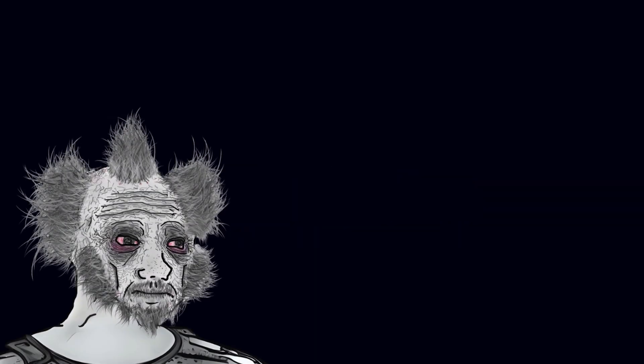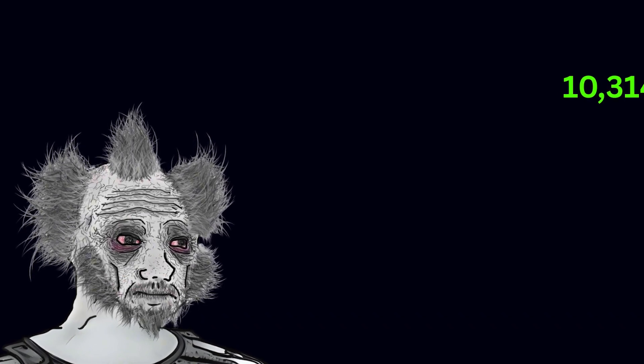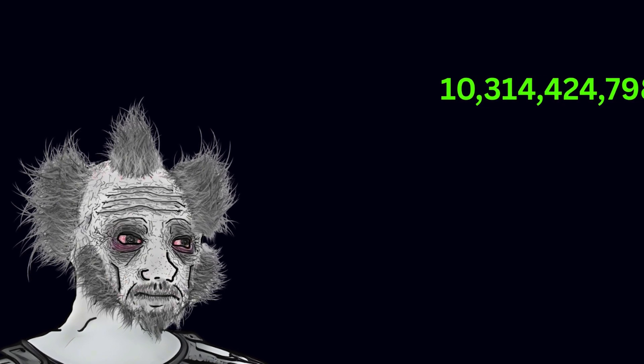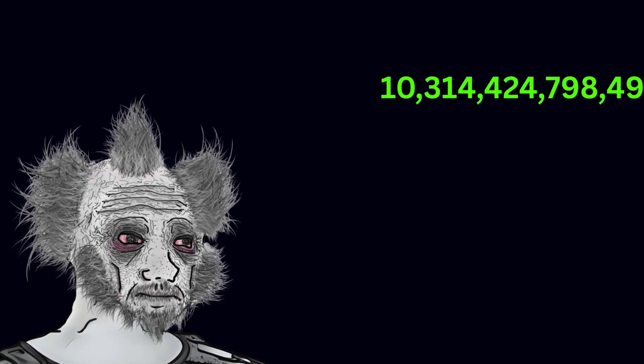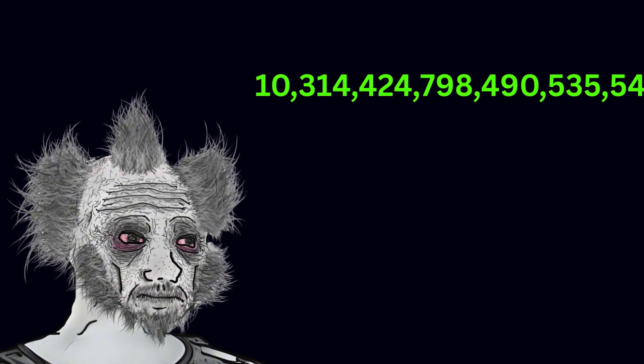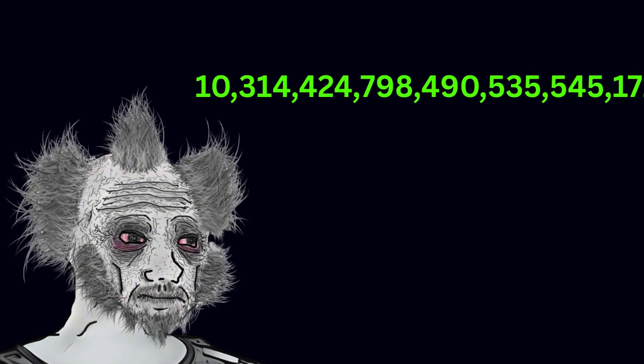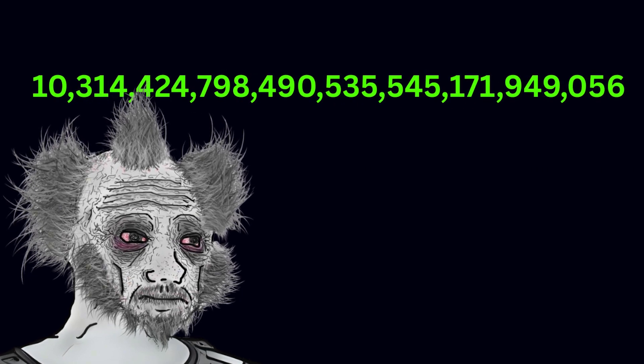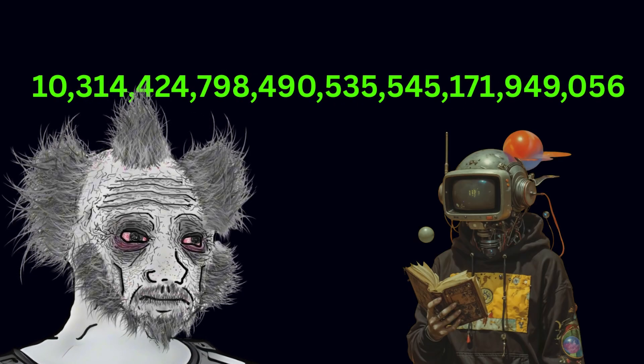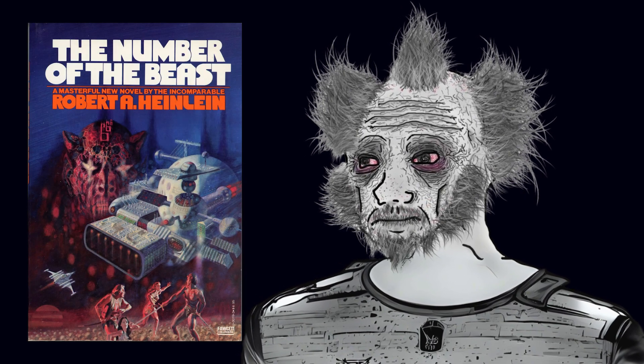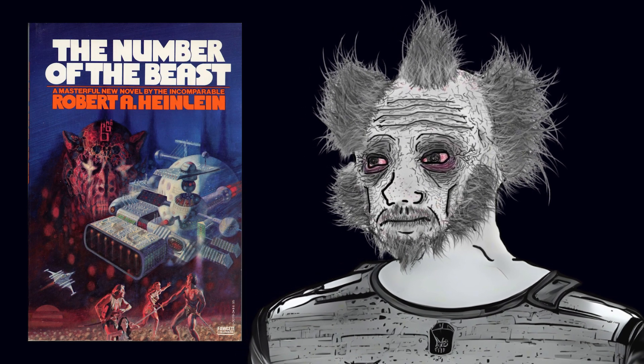Level 6. At level 6 we got the number 10 octillion, 314 septillion, 424 sextillion, 798 quintillion, 490 quadrillion, 535 trillion, 545 billion, 171 million, 949 thousand and 56. You will know about this number if you're a big sci-fi reader. So this is an important number from a science fiction novel by Robert A. Heinlein called the Number of the Beast. In the novel, the biblical number of the beast turns out to be not 666 but 6 to the 6th power or raised to the 6th power.